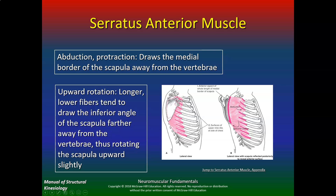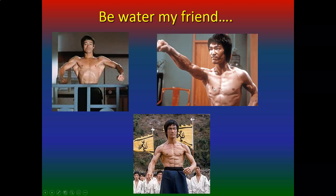The serratus anterior is probably one of the most important muscles — this is definitely on the quiz. It performs abduction/protraction, drawing the medial border of the scapula away from the vertebrae. The lower fibers tend to draw the inferior angle of the scapula further away from the vertebrae, thus rotating the scapula upward. I call this a 'Bruce Lee muscle' — the serratus allows that one-inch punch protraction. The power mostly comes from the hips, but that protraction is all serratus.